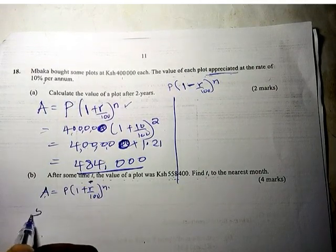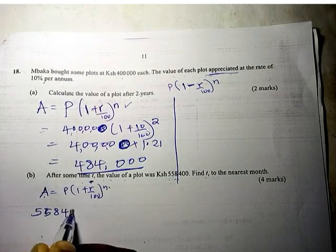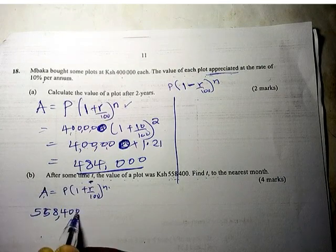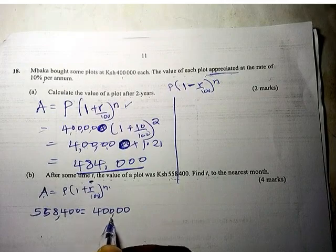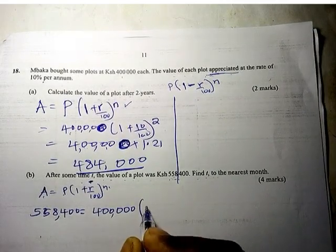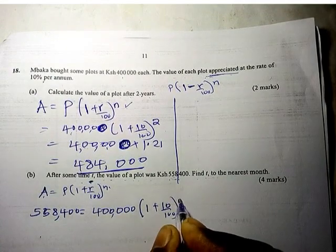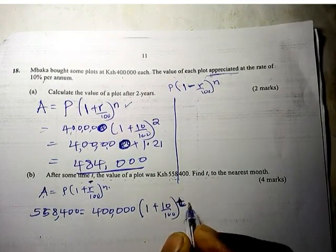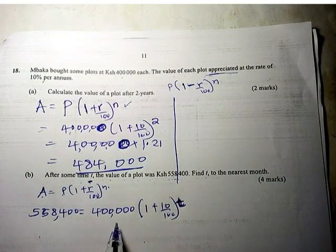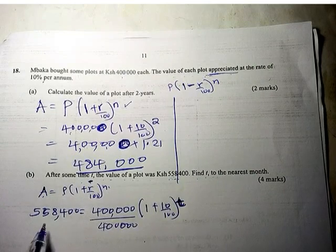We have been given the amount, which is 558,400, which equals the principal 400,000 times 1 plus 10 over 100 raised to power N. Now we are looking for the time T. So to get that, we divide by 400,000 both sides.